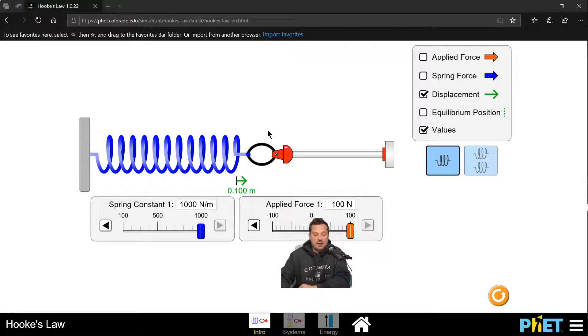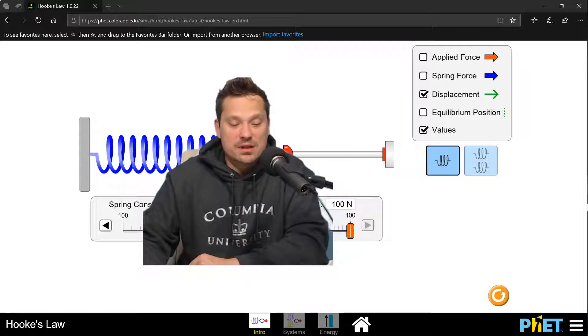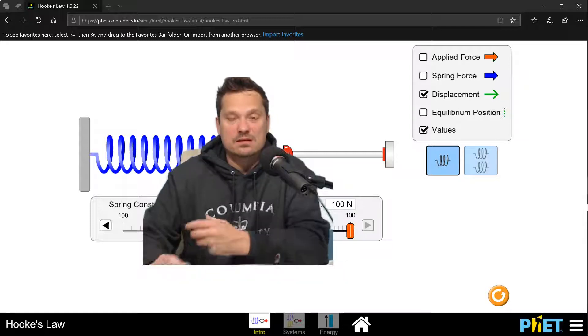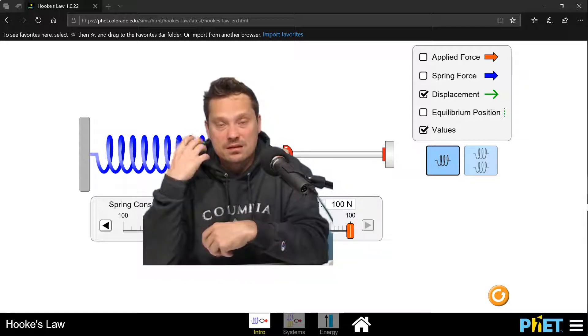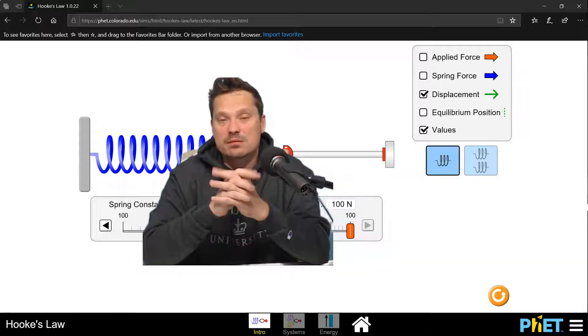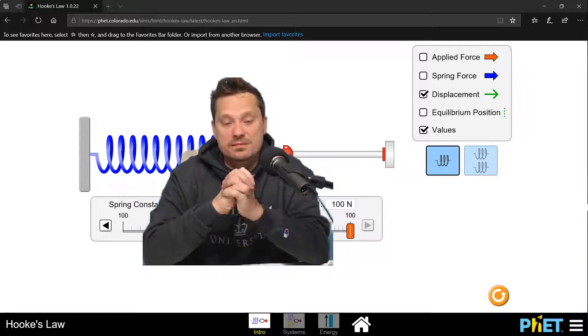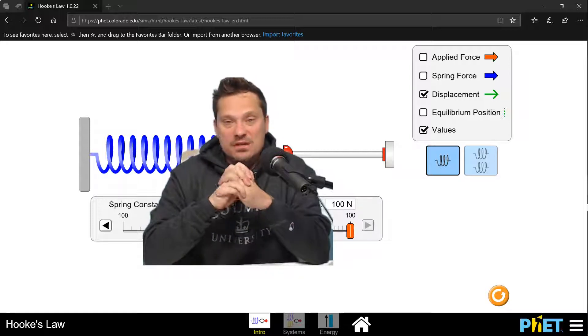So these are some of the fundamentals around the spring constant. In other words, I hope you understand why it has values like a number, and then there are newtons in the top, and there's a meter unit in the bottom of the spring constant, what that actually means. Okay, that is it for me. Thank you so much for watching. Please leave a like and subscribe. I'll see you in another video.